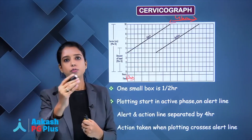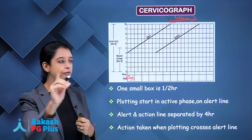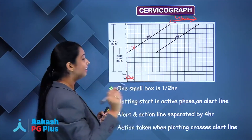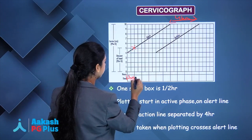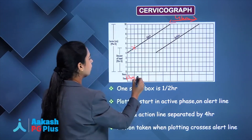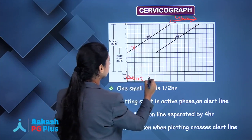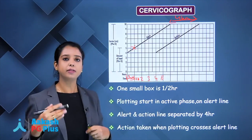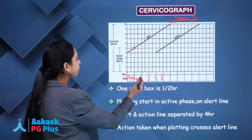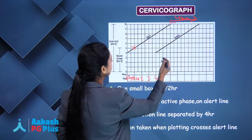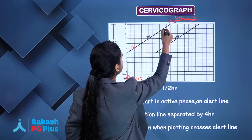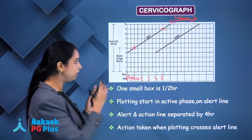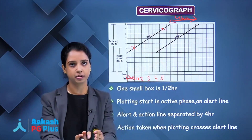Suppose a patient comes at 1 o'clock and she is 5 centimetres. Your first plot will be there. PV is generally repeated every 4 hours, so at 5 o'clock you check again. Ideally she should be at 9 centimetres, meaning dilatation must be at least 1 centimetre per hour according to WHO.